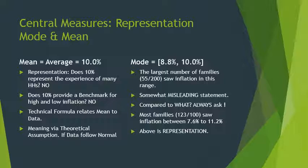If we want to represent the data, the mode is a better representation. This is the largest bin, which in our graph goes from 8.8% to 10.0%. We can say that the largest number of families — 55 out of 200 — saw inflation within this range. However, this is somewhat misleading because even though it is the largest bin, 55 is still a small number. Whenever you say 'the largest number,' you should always ask compared to what — here we are comparing with the number of families in other bins, even though that is not mentioned.